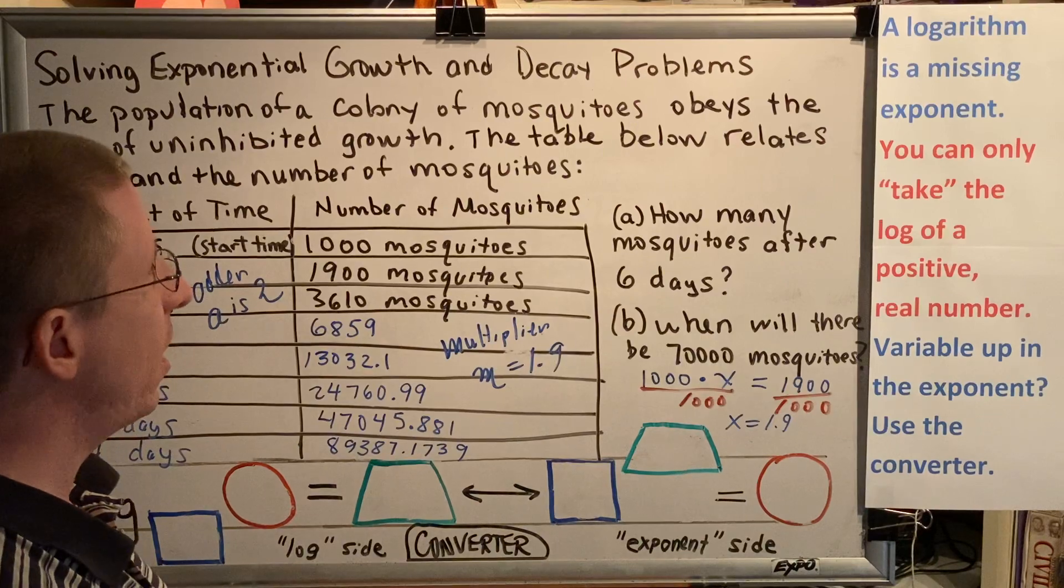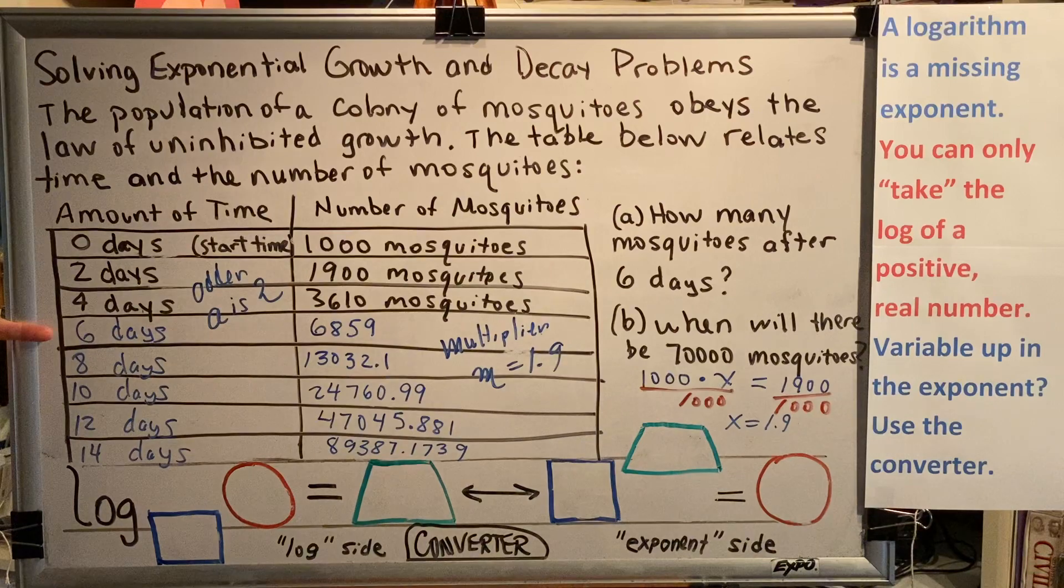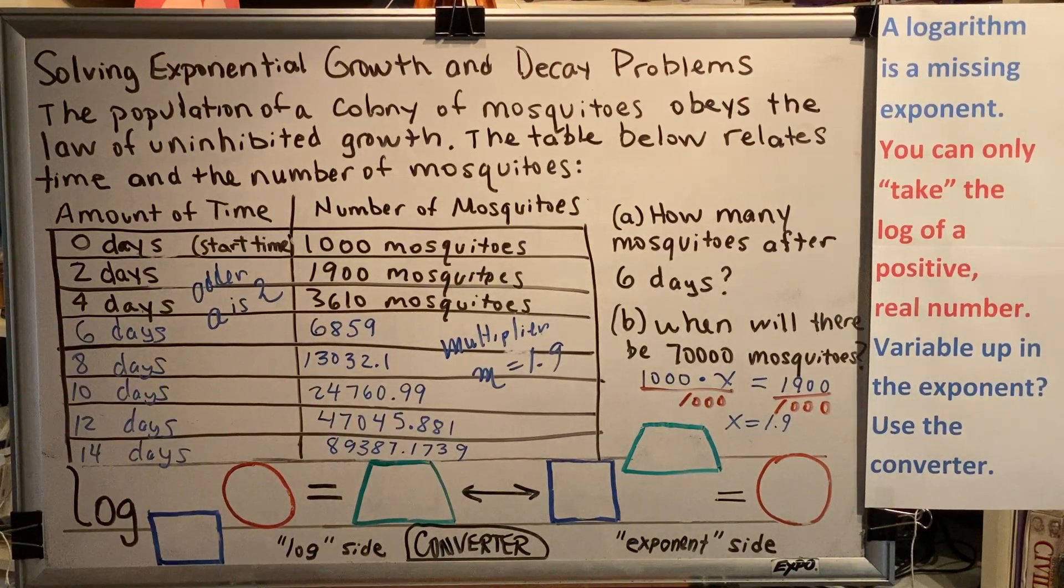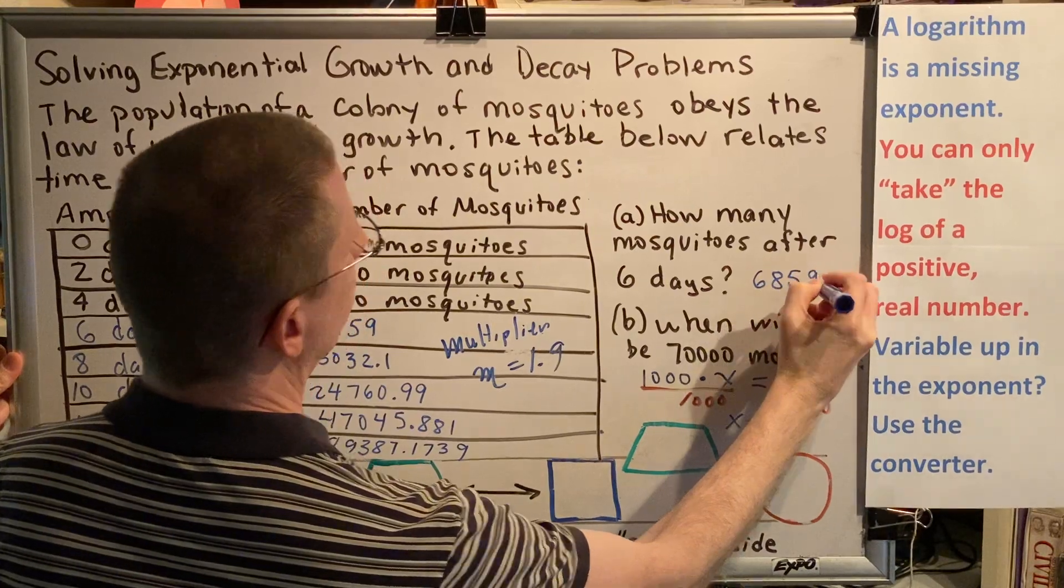Part A, how many mosquitoes after six days? Well, six days appears as a row in our table, and the number of mosquitoes is 6,859. Great, done.